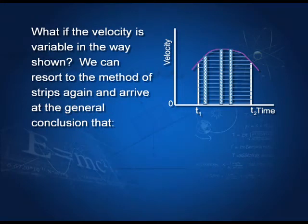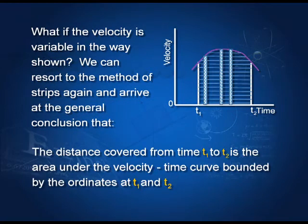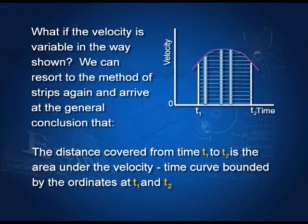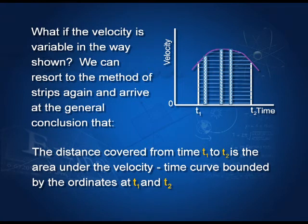If the velocity is changing non-uniformly, we again take the same approach: draw strips to cover the whole area. The distance covered from time t₁ to t₂ is equal to the area of these strips, which is the area under the velocity-time curve bounded by the ordinates at t₁ and t₂.